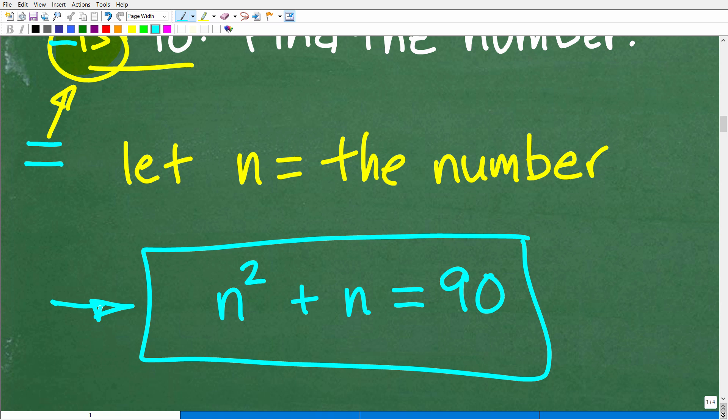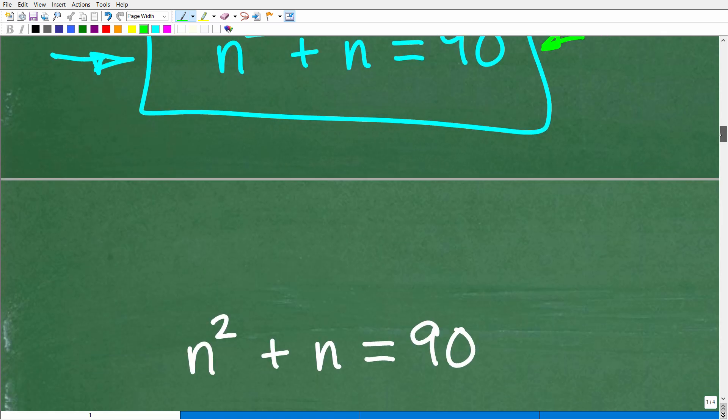At this point, if you understand what's going on, now we need to have the math skills to solve for N. So we have N squared plus N is equal to 90. If you want to pause the video and see if you can figure that out, that's fantastic. But I am going to figure out what N is equal to. Because if we can solve for N, indeed, we will have found that number or numbers.